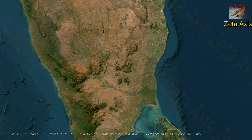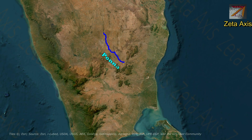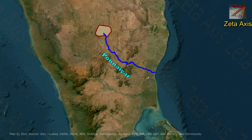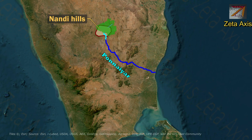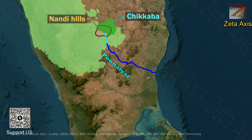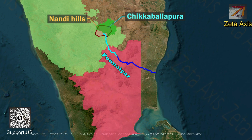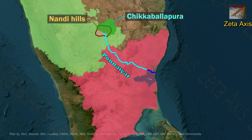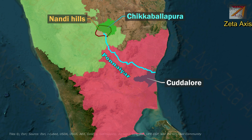Now let's discuss about the Purnayar river. The river originates in Nandi Hills in Chikabalapur district of Karnataka and flows through Tamil Nadu before flowing into the Bay of Bengal in Cuddalore district of Tamil Nadu. Some distributaries of the Purnayar river flow into Puducherry.